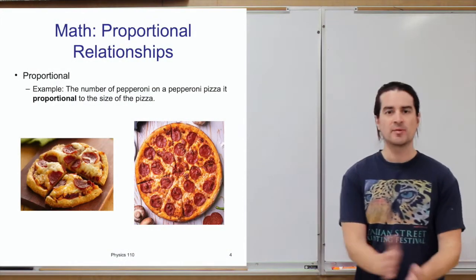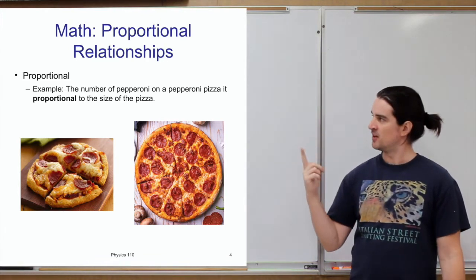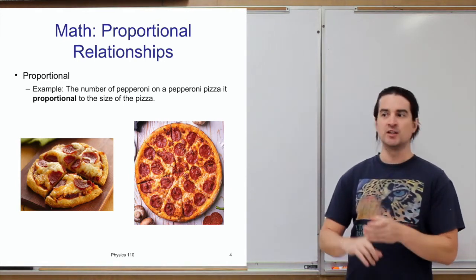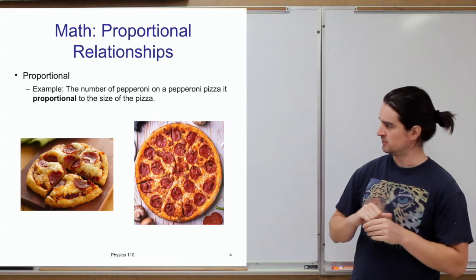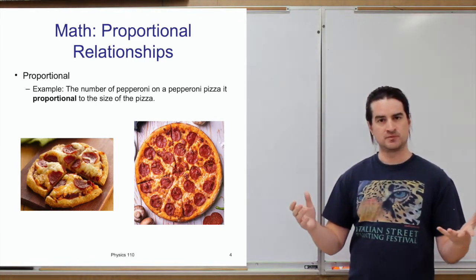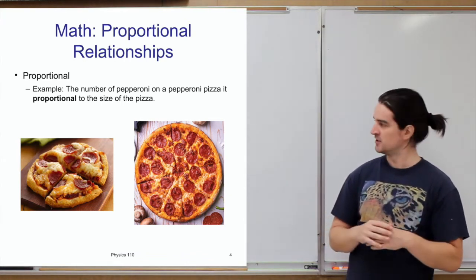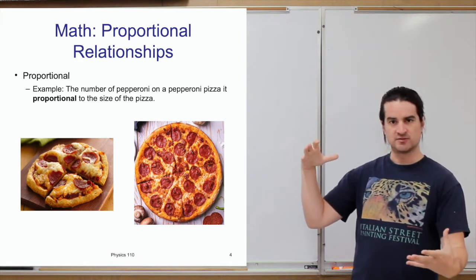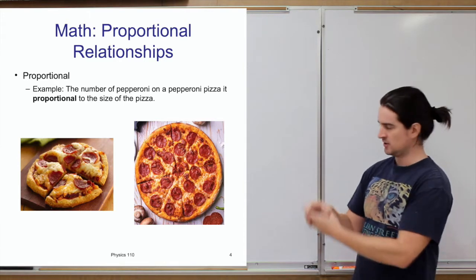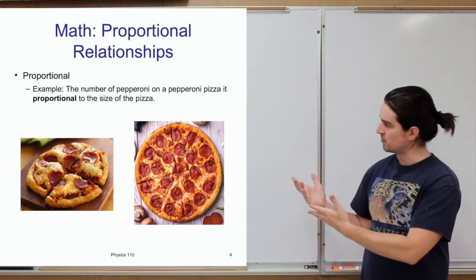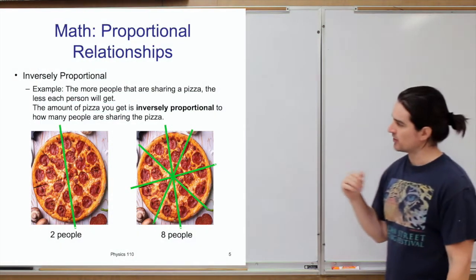An example of a proportional relationship: the number of pepperonis on a pepperoni pizza is proportional to the size of the pizza. With a very small pizza you only get a few pepperonis, but if you have a much larger pizza — assuming you're using the same size pepperonis — you'll end up with a lot more. Conversely, if you shrink it down even further, you might end up with just one pepperoni. So the number of pepperonis is proportional to the size of the pizza.